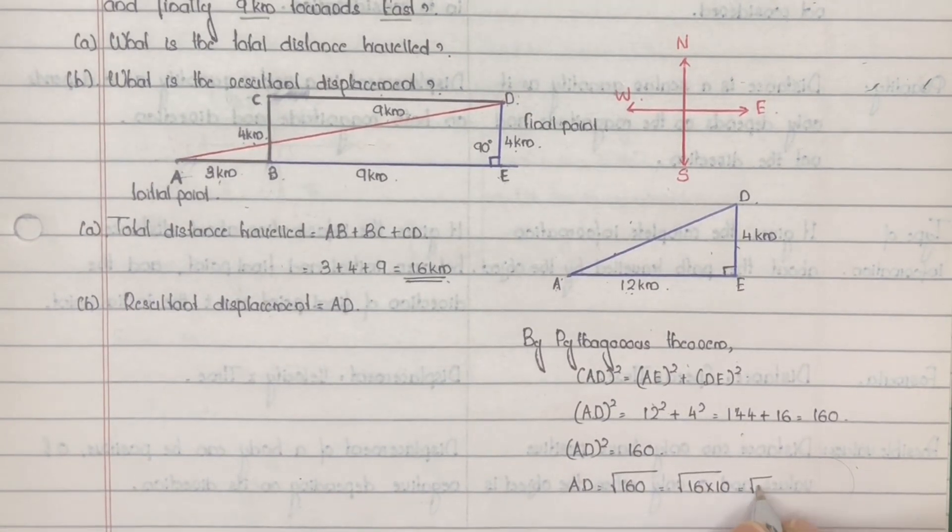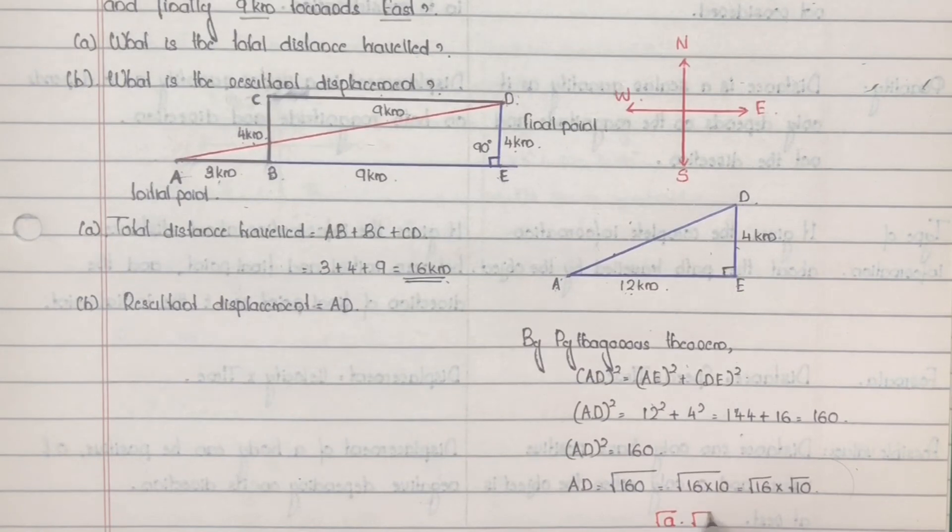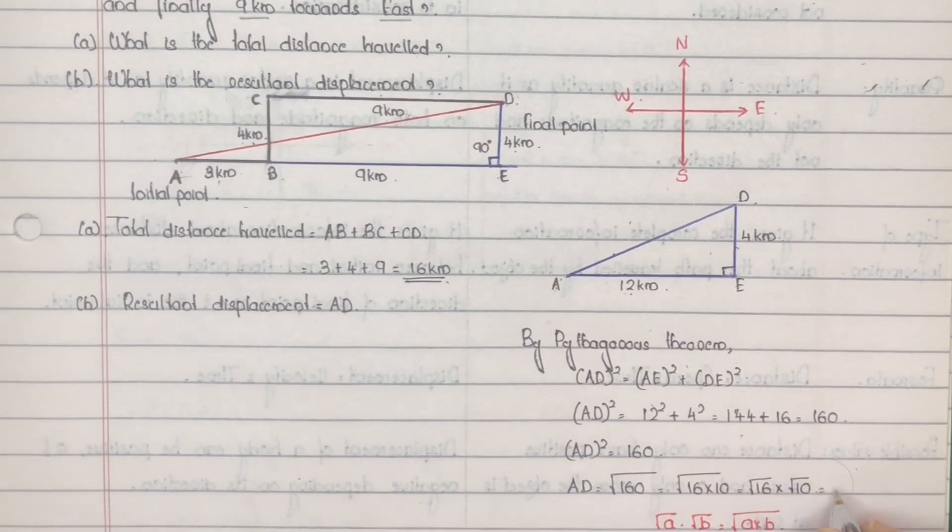So this is equal to √16 into √10. Since √A into √B is equal to √(A into B), √16 is 4√10.